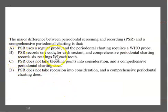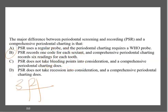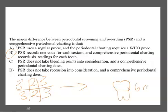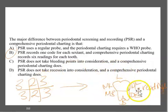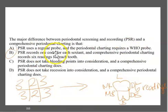So the correct answer is B: PSR records one code for each section, while a comprehensive periodontal charting records six readings for each tooth. When you do a periodontal chart, you take six different readings per tooth — mesial lingual, lingual, distal lingual, mesial buccal, buccal, and distal buccal. That's what option B is saying: PSR records one code per section, comprehensive charting records six readings per tooth.